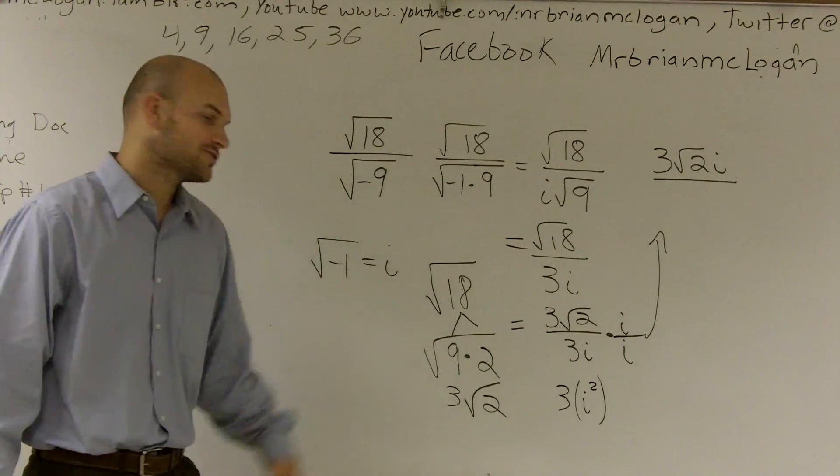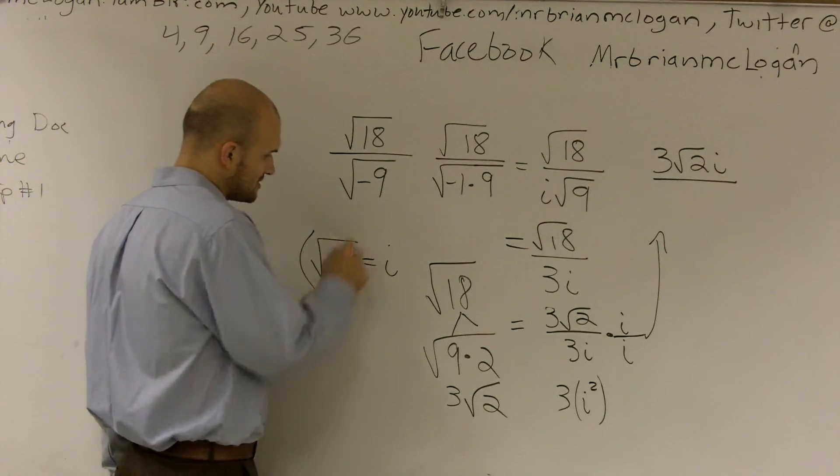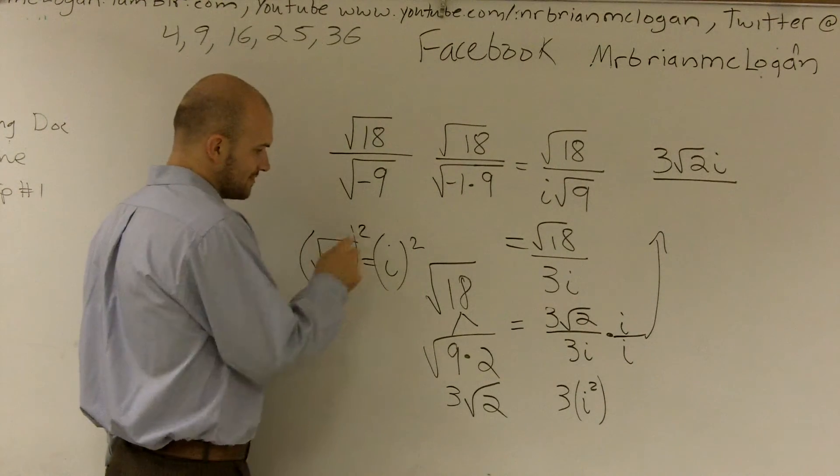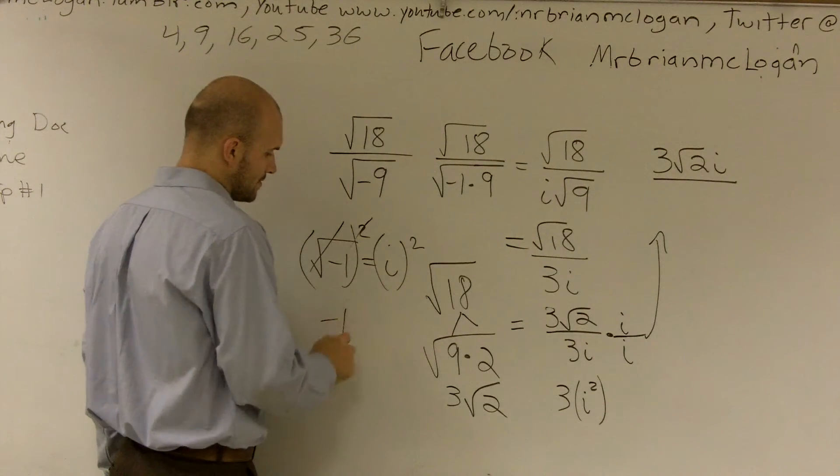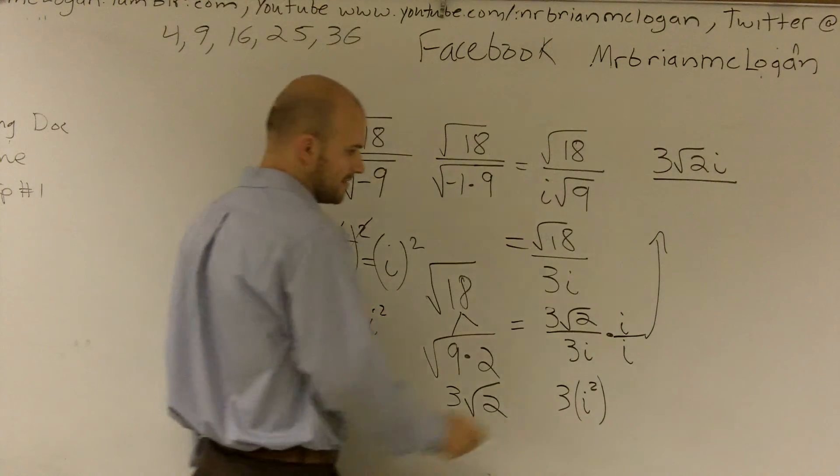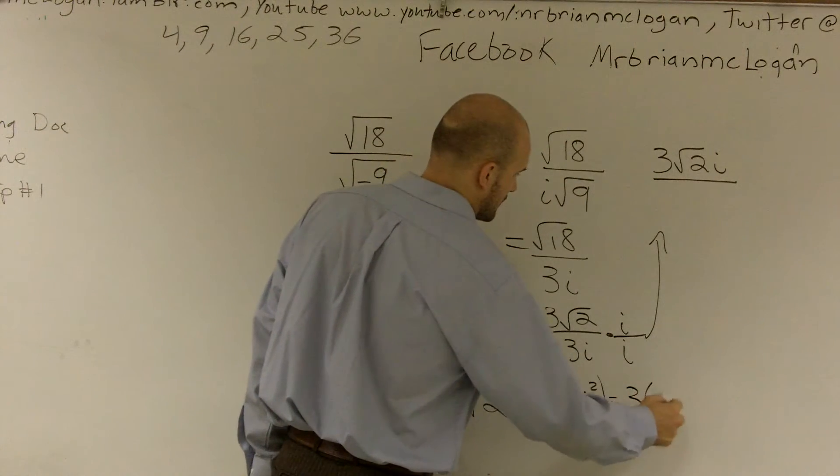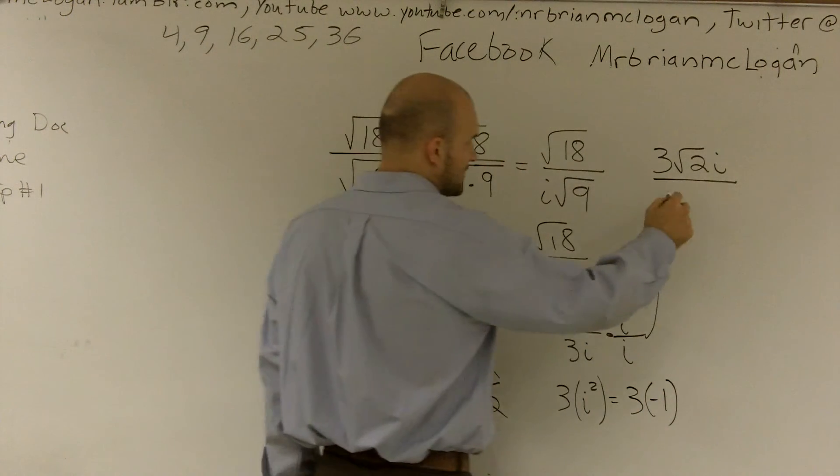So what I'll be left with is 3 square root of 2i over 3 times i squared. Now, if I don't know what i squared is, I can just square both sides here. I obtain i squared. The square root of something squared cancels out. So therefore, 3 times negative 1 is going to give me a negative 3.